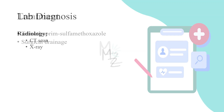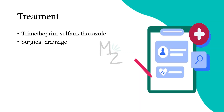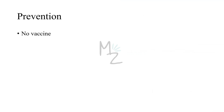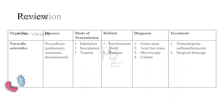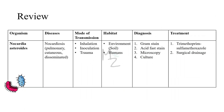Treatment: Trimethoprim-sulfamethoxazole is used for treating nocardiosis. Surgical drainage of abscesses is also performed. Prevention: There is no vaccine or prophylactic drug available to prevent nocardiosis.